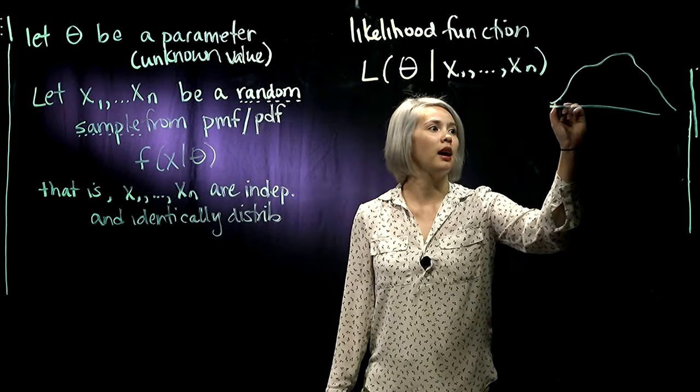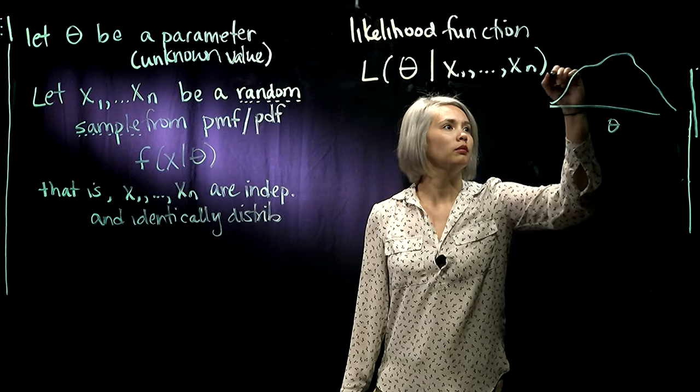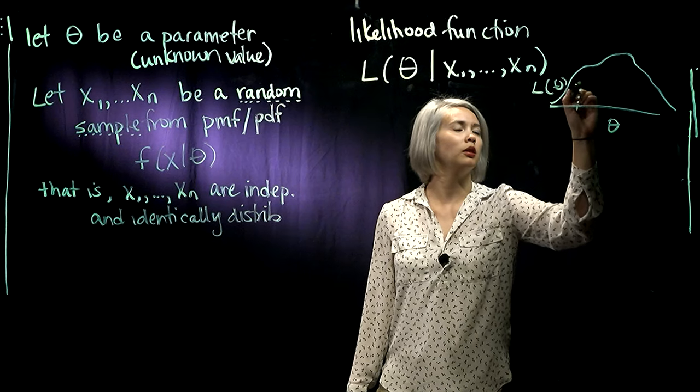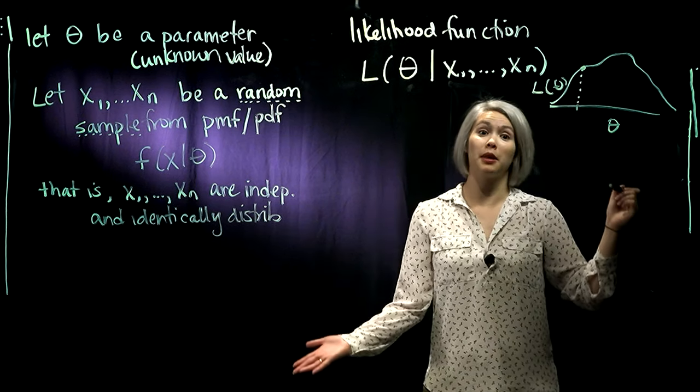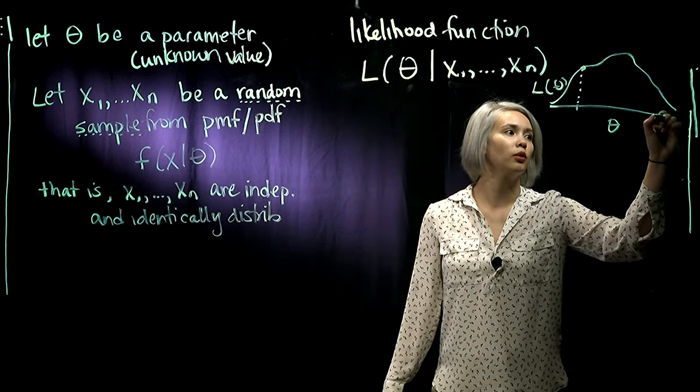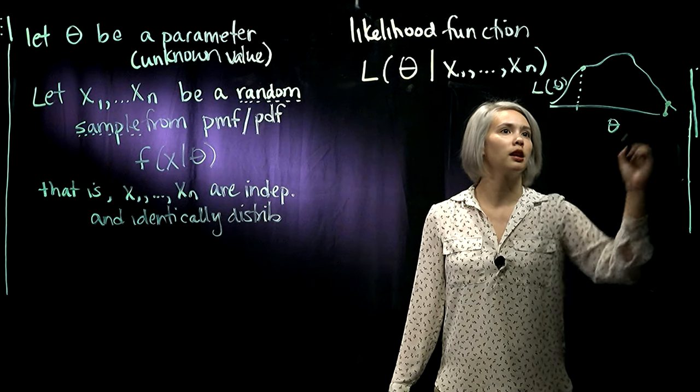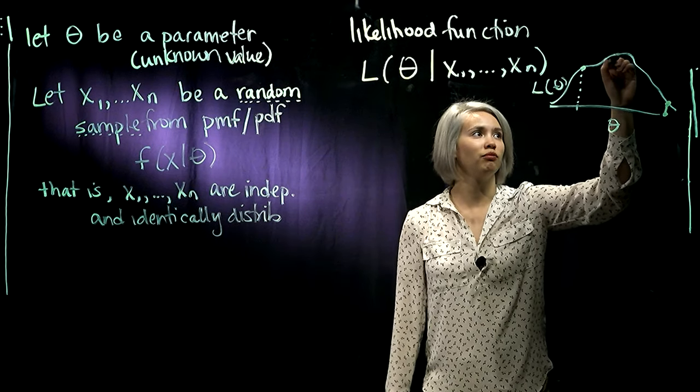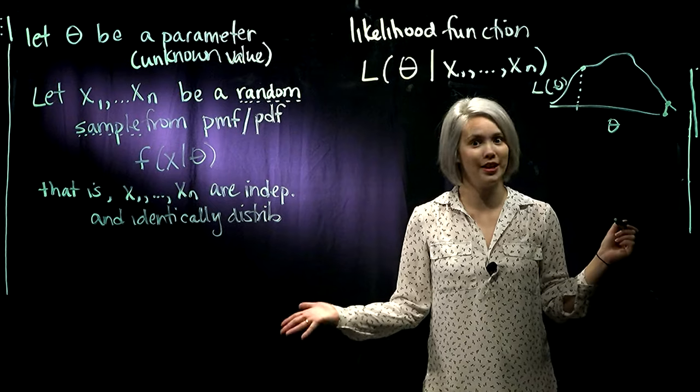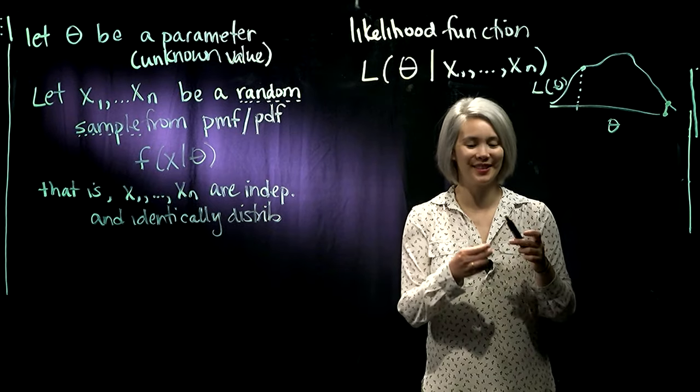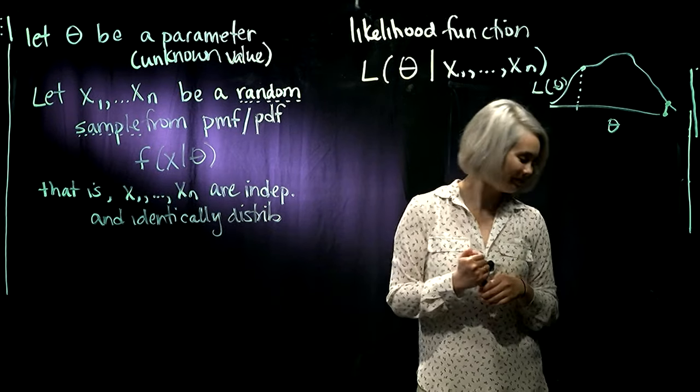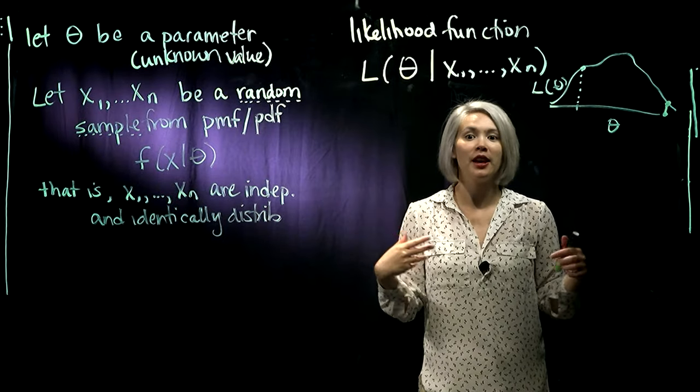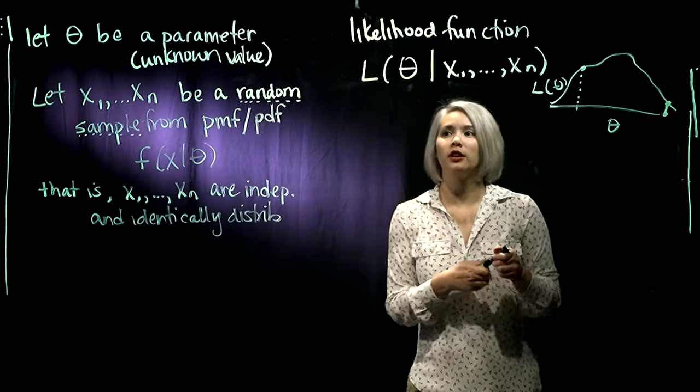So if we had a value of theta like here, then our likelihood would be this. So maybe that looks pretty high in comparison to this value of theta, which gives a pretty low likelihood. So the higher the likelihood is, the more likely that parameter value is given the data that we have observed. So now we have an idea of what that likelihood function is. How do we actually get that likelihood function?